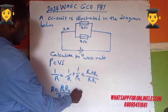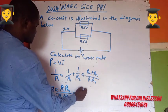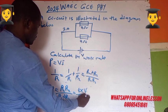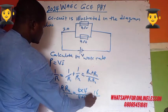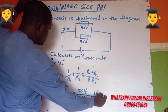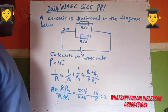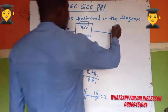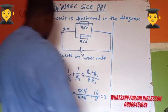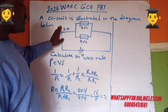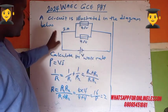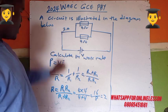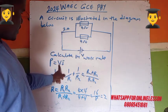Here you have four times four over four plus four, so you get 16 over 8, which equals 2 ohms. That is the equivalent resistance. The current flowing through the circuit is 2 amps.